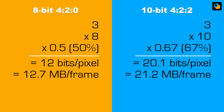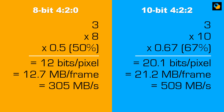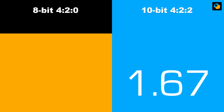To get the data rate, multiply by the frame rate — let's assume 24 frames per second. To many, this is too much data. Here I'm comparing 4:2:0 and 4:2:2, but you can use this system to calculate any combination you like. What you'll see is that 10-bit 4:2:2 footage — I'll just call them 8-bit and 10-bit from here on — needs about 1.67 times more data to show its worth.